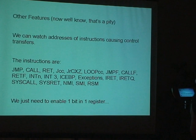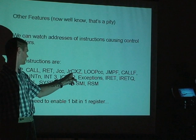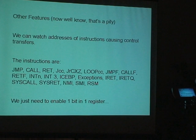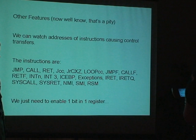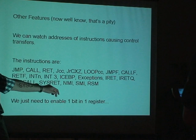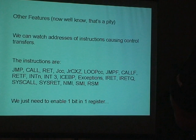The CPU records these instructions: jumps, calls, returns, conditional jumps, jump if CX is zero, loops, far jumps, far calls, return for pairs, interrupts, exceptions, returns from interrupts, system calls, system returns, non-maskable interrupts, system management interrupts, and resuming from system management. We just need to enable one bit in one register.